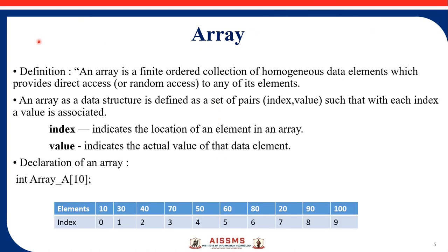Now we will see what an array is. An array is a finite, ordered collection of homogeneous data elements which provides direct access or random access to any of its elements. An array as a data structure is defined as a set of pairs — index comma value — such that with each index a value is associated. The index indicates the location of an element in an array, and the value indicates the actual value of that data element.